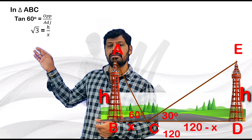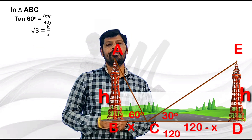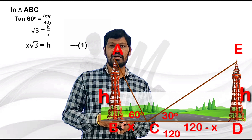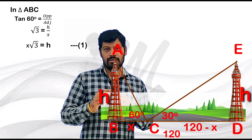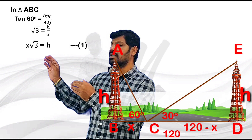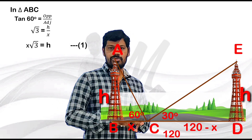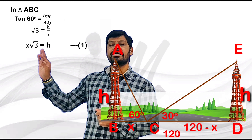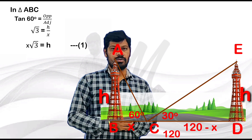After transposing, x root 3 is equal to H. Both values are unknown. This becomes Equation 1: x root 3 = H.